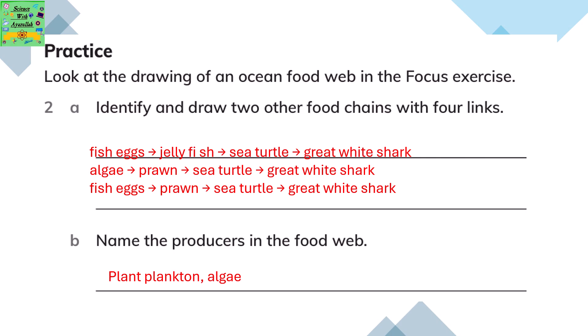The second four-link food chain: algae consumed by prawns, which are eaten by sea turtle, and then by great white shark. Name the producers in the food web — the producers are plant plankton and algae.